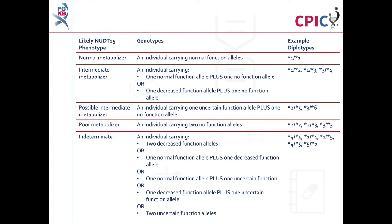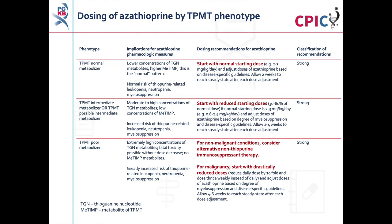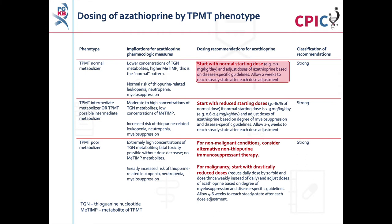This can include rare reduced function or non-functional alleles which are not routinely screened for in some genotyping tests. These are the CPIC dosing recommendations for azathioprine by TPMT phenotype. Patients who are TPMT normal metabolizers will have lower concentrations of thioguanine nucleotide metabolites. These patients are at a normal risk of thiopurine-related myelosuppression and can be given the normal starting dose of azathioprine. This is a strong recommendation.